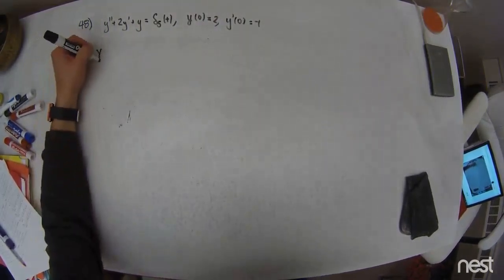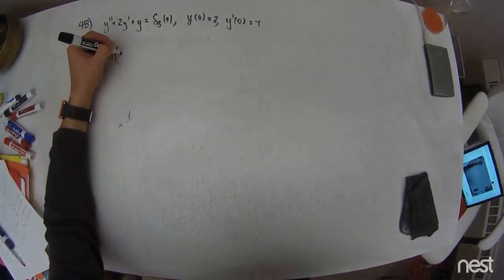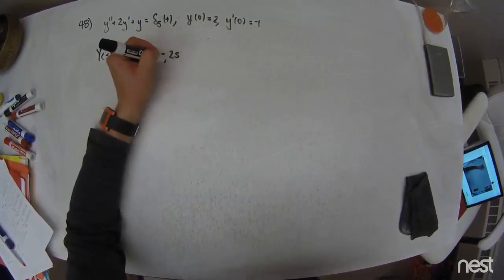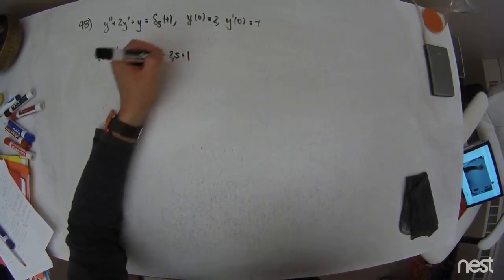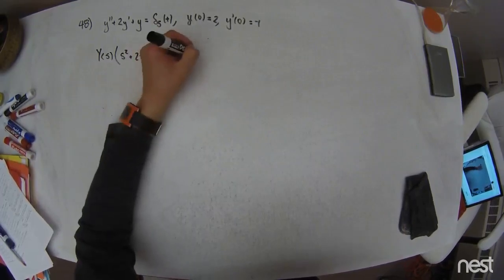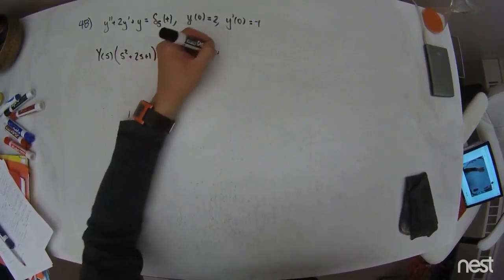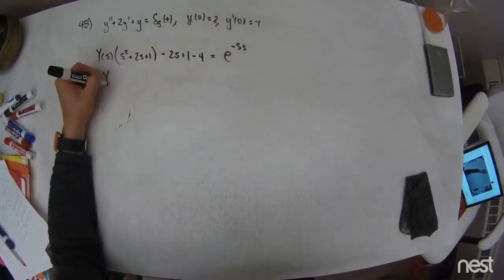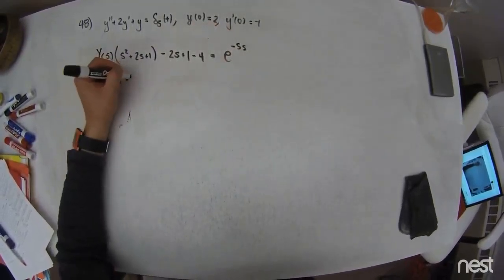So I take the Laplace transform and I get capital Y of S times S squared plus 2S plus 1 minus 2S plus 1 minus 4 is equal to E to the negative 5S.